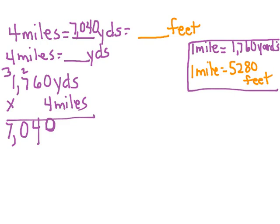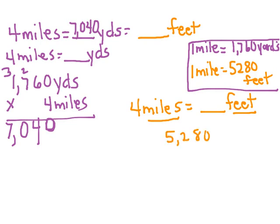Now I'm going to work on 4 miles equals how many feet. Once again, I'm going from a larger unit to a smaller unit, so I'm going to use multiplication. I know that 5,280 feet equals 1 mile, so I must multiply 5,280 by 4. 4 times 0 is 0. 4 times 8 is 32, carry the 3. 4 times 2 is 8, and 3 more is 11. Carry the 1. 4 times 5 is 20, plus 1 is 21. Place my comma, and 4 miles is equal to 21,120 feet.